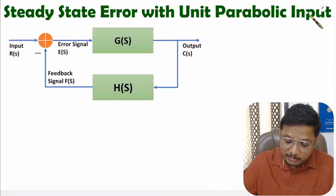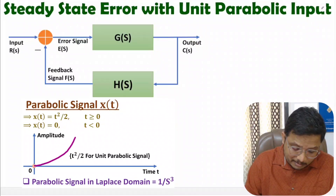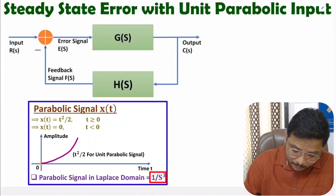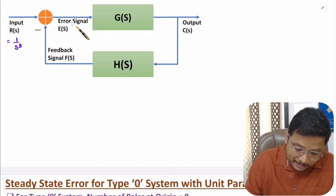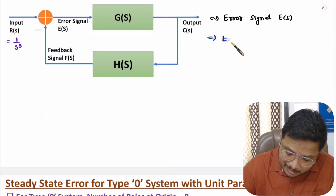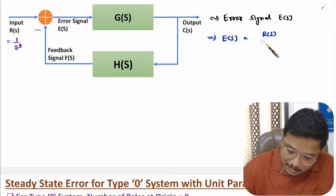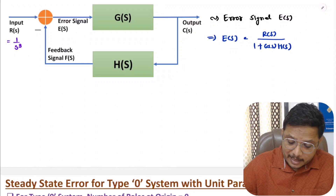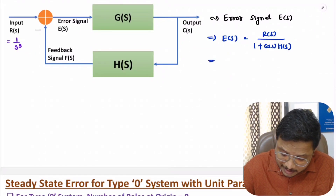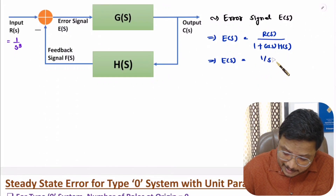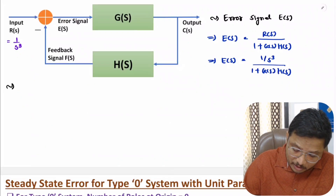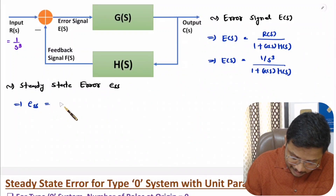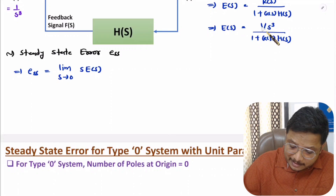Let us identify steady state error with unit parabolic input. Here we have a negative feedback system where input is R(s). For parabolic input, the input is 1/s³. Steady state error calculation is based on the error signal. The error signal E(s) is R(s) divided by 1 plus G(s)H(s), where R(s) is 1/s³. So steady state error is limit s tends to 0, s into E(s).